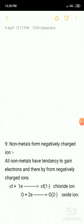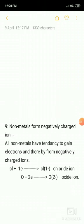Non-metals form negatively charged ions. All non-metals have a tendency to gain electrons and thereby form negatively charged ions. For example chlorine has seven electrons in the outermost shell. It gains one electron and forms chloride negative ion.